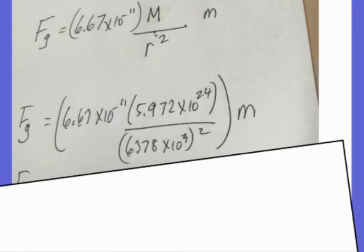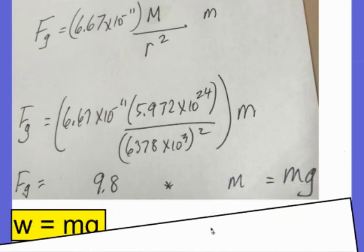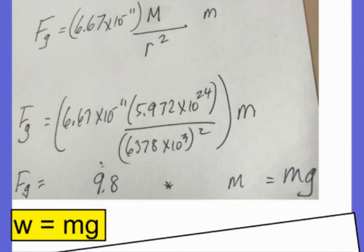And let's go ahead and plug in the value for the mass of the earth and the radius of the earth. And what you see is when you do this calculation, look what you get, 9.8. So this is saying the force of gravity is M times 9.8, mg. And there we go. Our equation for weight W equals mg is really just a simplification of Newton's law of universal gravitation.